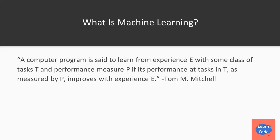What is machine learning? A computer program is said to learn from experience E with some class of task T and performance measure P, if its performance at task T as measured by P improves with experience E. What this means is that each time the computer program gets an experience, its performance improves over task T. This statement will become more clear as we go throughout the course.